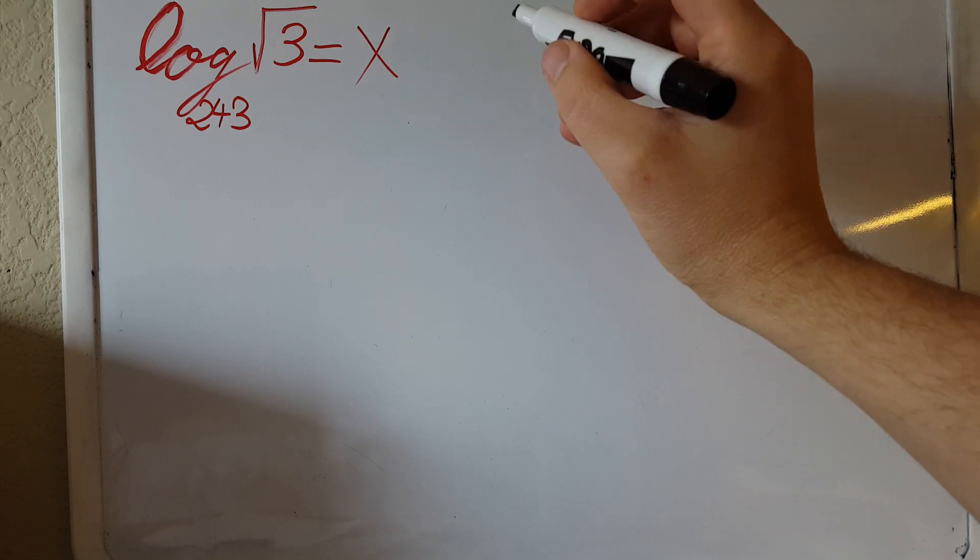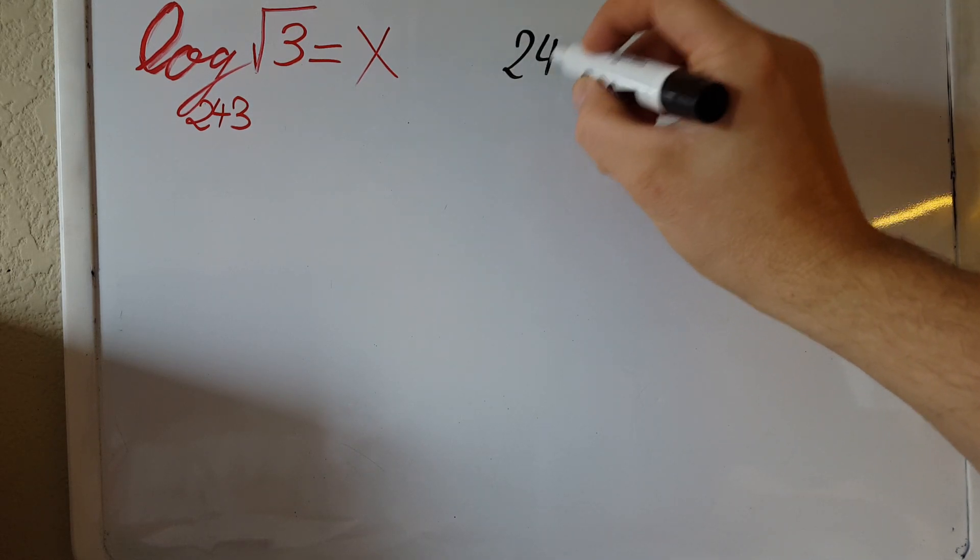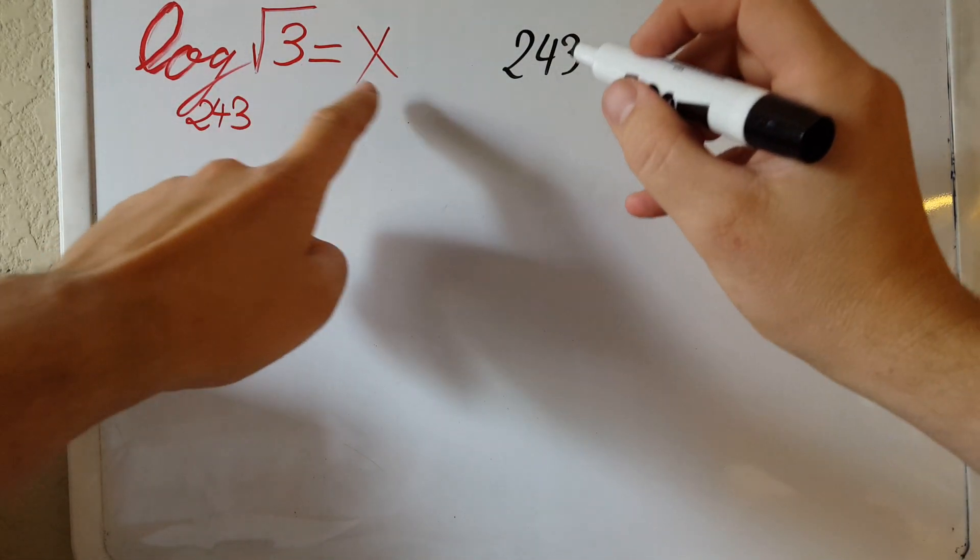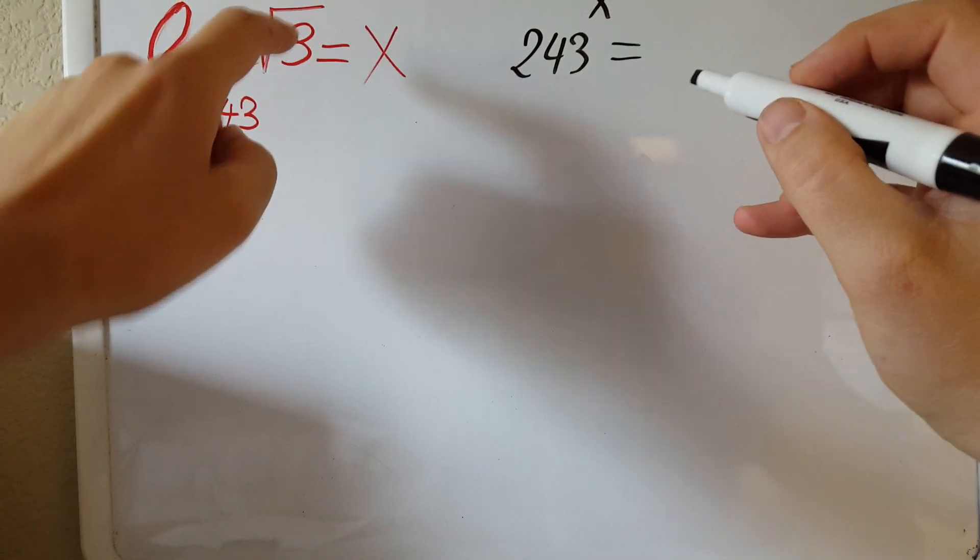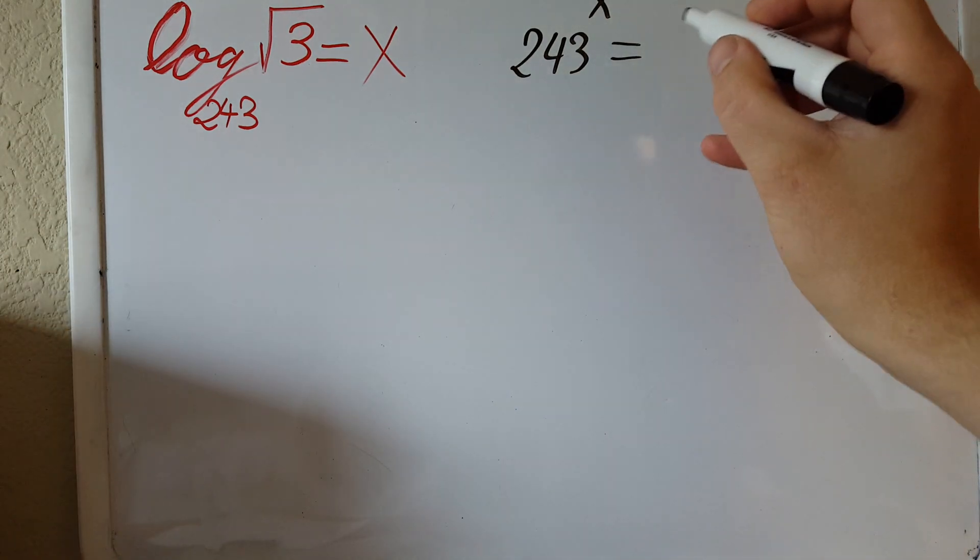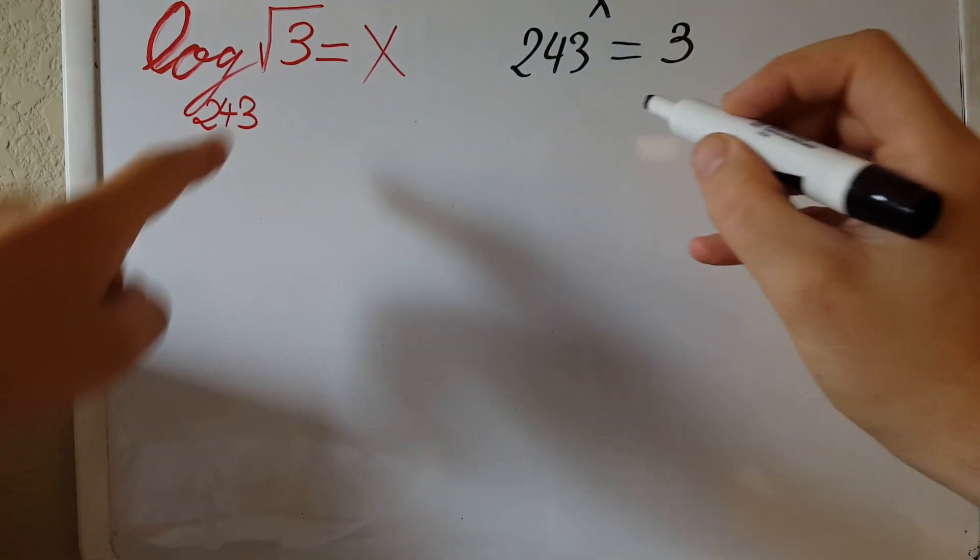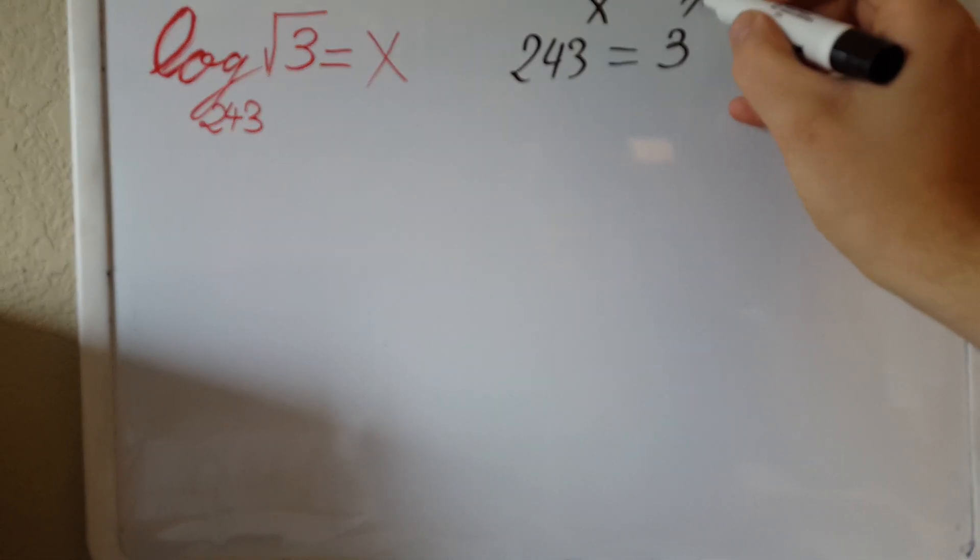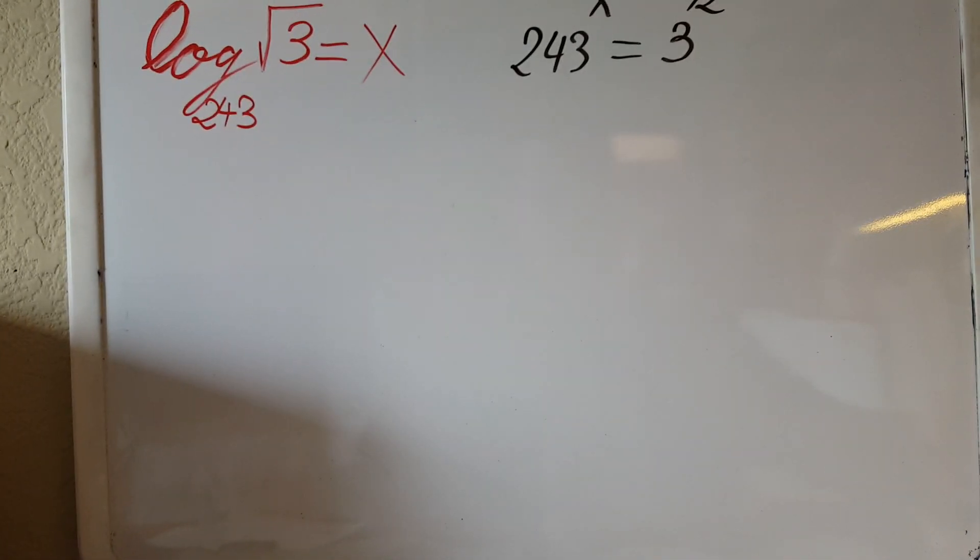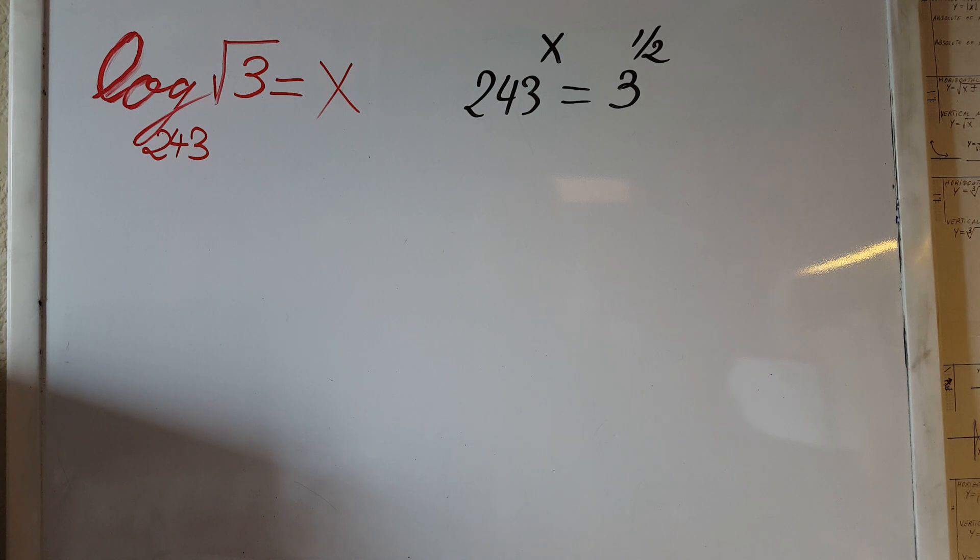So I'm going to do that: 243 to the power of x equals square root 3. But instead of writing square root 3, I'm going to rewrite the square root as an exponent, which is one half. At this point, we can see that this problem has something to do with threes.